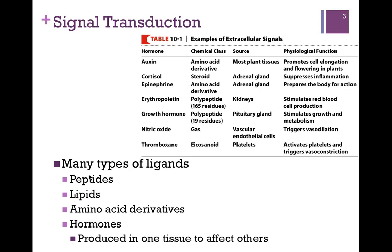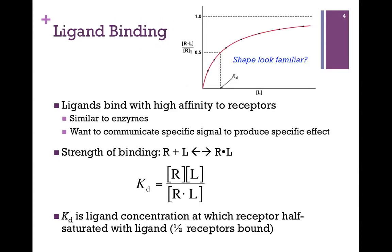Here's a table from your book with some examples of hormones or ligands that might bind receptors. It's not important you remember the hormones and their classes and sources, just note that there are many different types. Some are amino acid derivatives, some are steroids, some are peptides, some are even gases, and we'll look at an example of an eicosanoid as well. A hormone is a substance that's produced in one tissue but has its effects on multiple tissues.